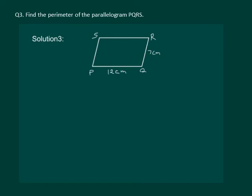Let us read the question: find the perimeter of parallelogram PQRS. From the property we know that in a parallelogram the opposite sides are equal, so PQ equals SR equals 12 cm, and QR equals PS equals 7 cm.